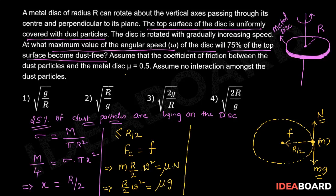Since the value of mu is given as half, substituting that value here in this equation we get omega equal to under root of g upon R. Therefore the correct option is 1.